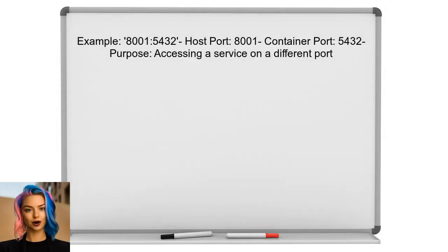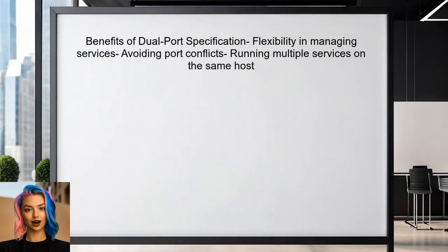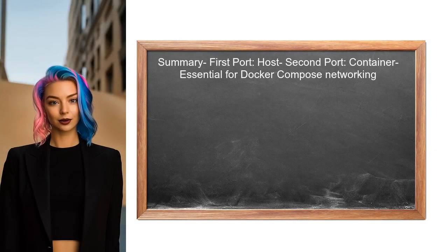Now let's look at the second example: 8001:5432. Here, port 8001 on the host is mapped to port 5432 on the container. This is useful when you want to expose a different port on the host for accessing a service running on a different port inside the container. This dual port specification allows for flexibility in managing services — you can run multiple services on the same host without port conflicts by mapping them to different host ports. Remember: the first port is for the host and the second is for the container. This setup is essential for proper networking in Docker Compose.